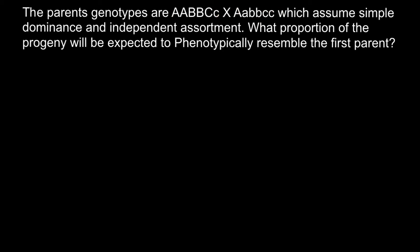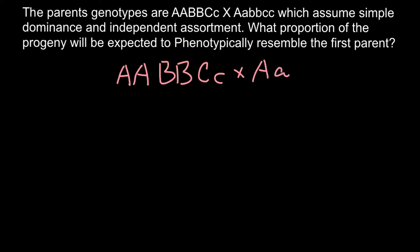Let me write down the genotypes one more time. Parent 1 is capital A capital A, capital B capital B, and capital C small c. Parent 2 is capital A small a, small b small b, and small c small c.